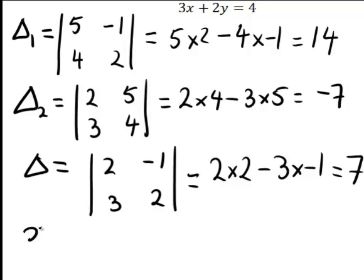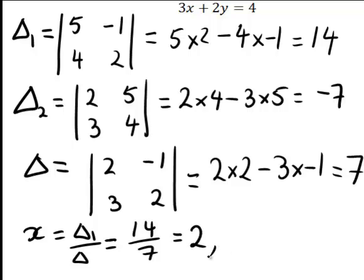So now x we saw is just equal to delta1 divided by delta, so in this case x is 14 divided by 7, giving us a value of 2.